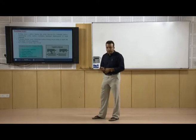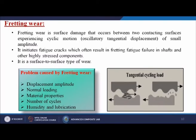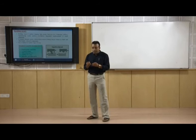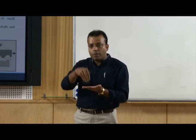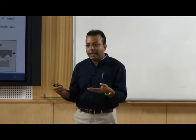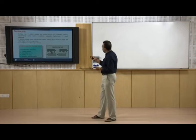Next is fretting wear. Fretting wear is surface damage that occurs between two contacting surfaces experiencing cyclic motions of small amplitude. It is a slightly higher version of surface fatigue. In surface fatigue the normal load acts on the material, but in fretting wear the load is tangential or sidewise — that is why this kind of wear takes place.